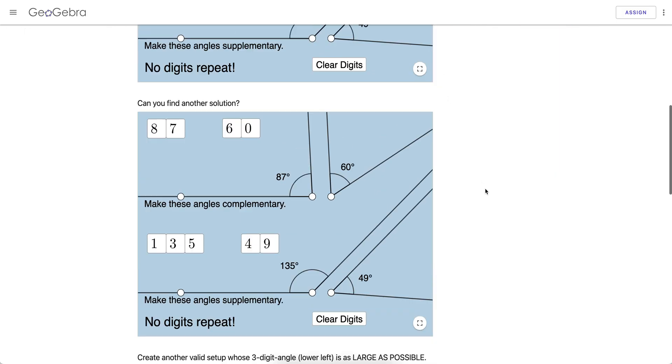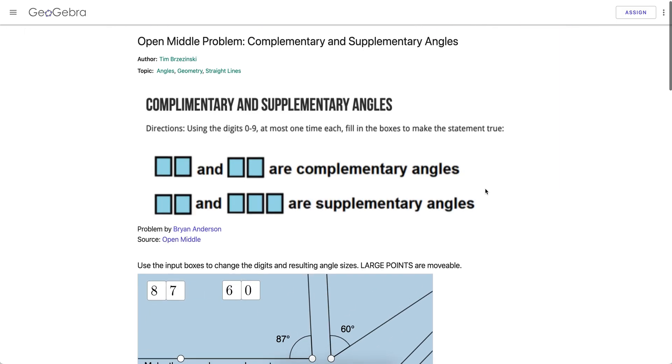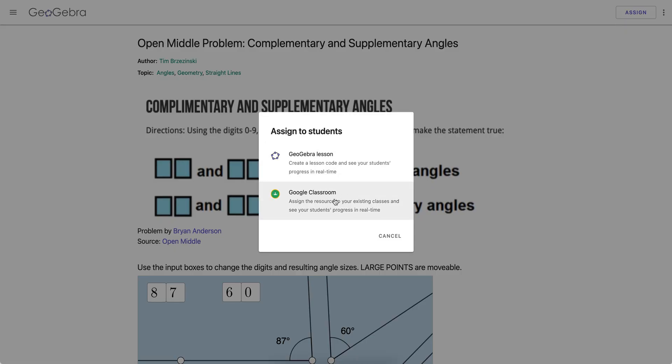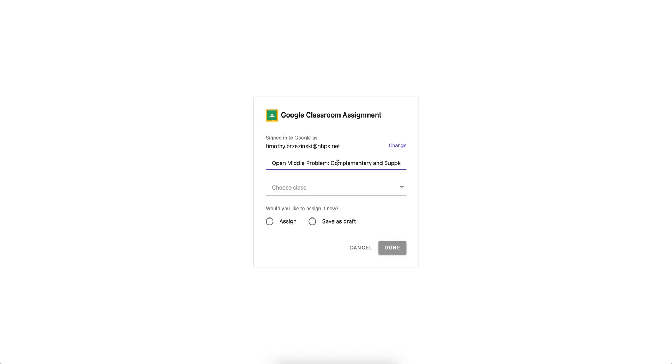So if you have a single GeoGebra activity shown, you can go ahead and hit assign up here and directly assign it to Google Classroom, no problem. I go to Google Classroom and once the thing pops up, I can change the title if I want and I can choose the classes to which I want to assign this particular task. I could save it as a draft and hit done. It'll assign it directly to Google Classroom.